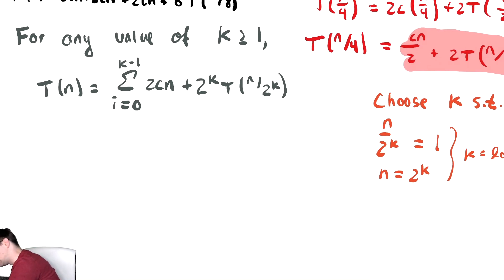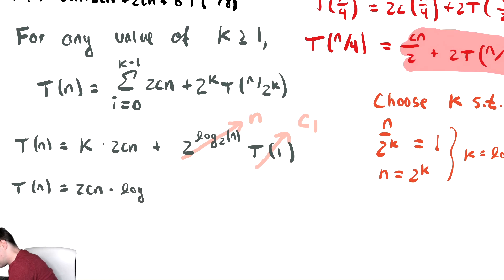Now we just plug that in and simplify. T of n equals the summation which simplifies to k times 2cn, plus 2 to the log base 2 of n times T of 1. Since 2 to the log base 2 of n is just n, and T of 1 is c1, we get T of n equals 2cn times k, which is log base 2 of n, plus c1n.